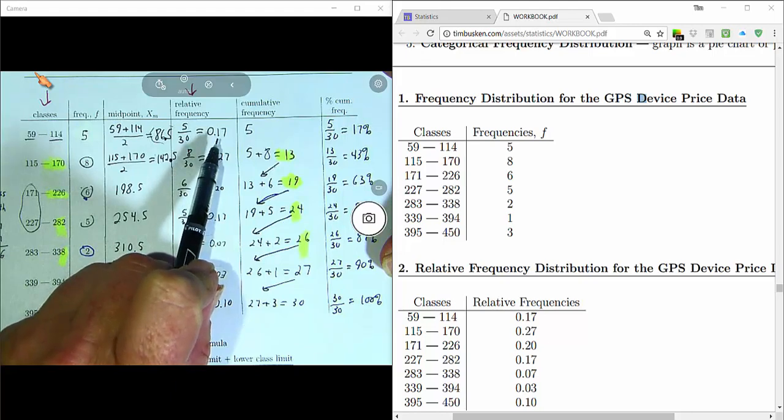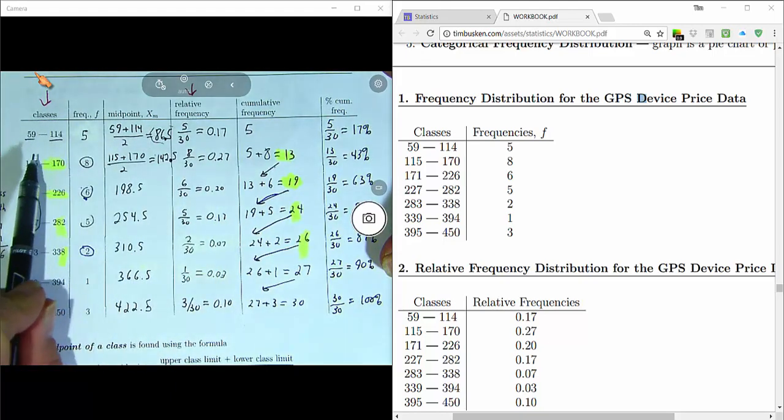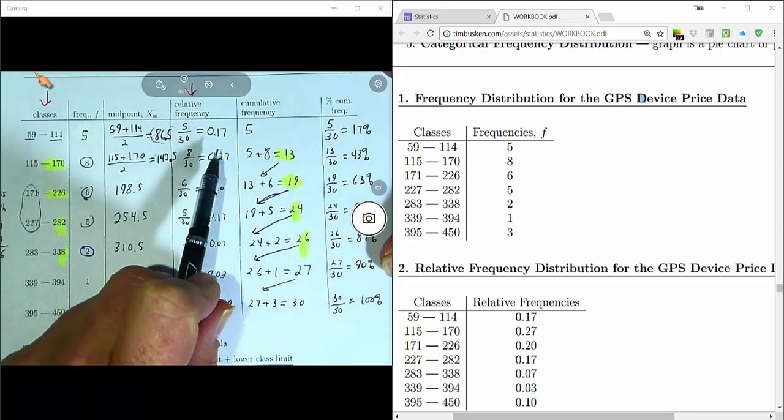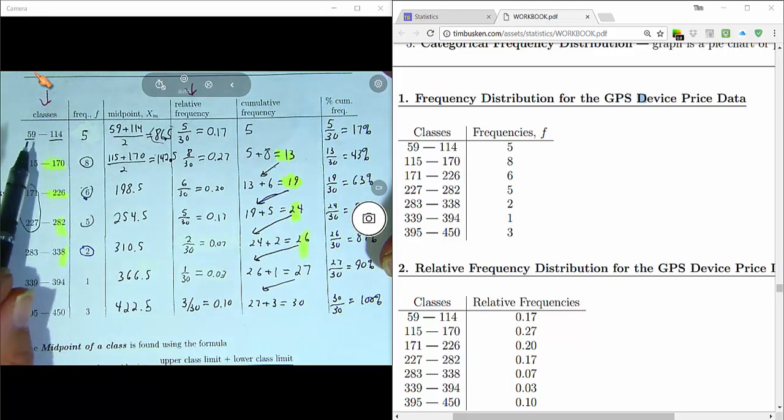So what we're saying here is 17% of the GPS device prices belong to this first class. Or we're saying 17% of the devices in the sample are priced between and including $59 and $114.